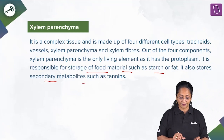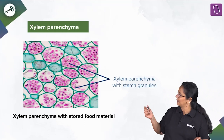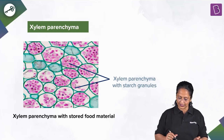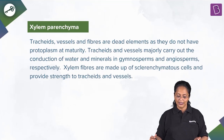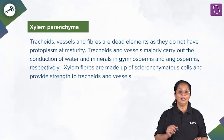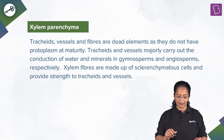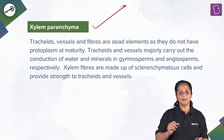Tannin is a secondary metabolite. This is a cross-section of xylem — you can see xylem parenchyma with starch granules. Tracheids, vessels, and fibers are all dead elements as they do not have protoplasm at maturity. Tracheids and vessels majorly carry out conduction of water and minerals in gymnosperms and angiosperms respectively. Xylem fibers are made up of sclerenchyma cells and provide strength. So the right answer: tannins are stored in xylem parenchyma.